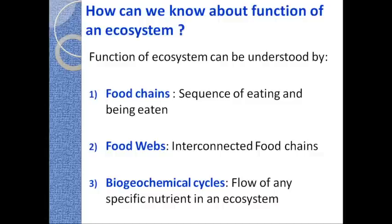All animals are free to participate in any food chain operating in that ecosystem — there are no restrictions. Most animals participate in more than one food chain, and in this way they make connections between two or more food chains. By participating in multiple chains they form a net-like structure known as a food web. So interconnected food chains form a web-like network called a food web. By studying food webs we can also know about the function of an ecosystem.